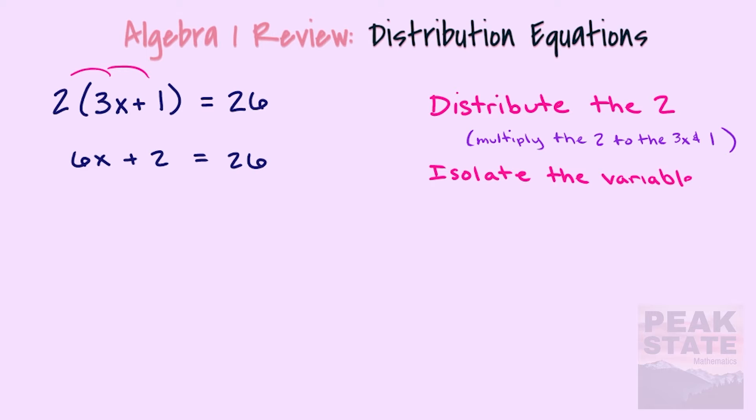Get the coefficient to one, so we'll divide both sides by six. And we'll see in this situation that x is equal to four.